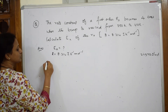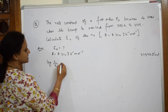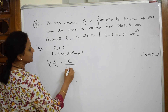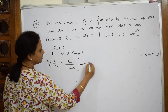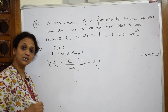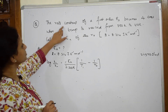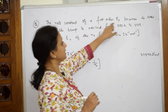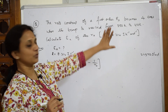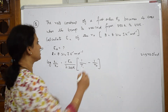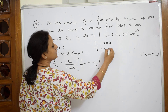Write the Arrhenius equation: log K1 by K2 is equal to minus Ea by 2.303 R, into 1 by T1 minus 1 by T2. The clue given is the rate constant becomes four times when temperature is raised from 350 to 410 K. So T1 is equal to 350 Kelvin and T2 is equal to 410 Kelvin.